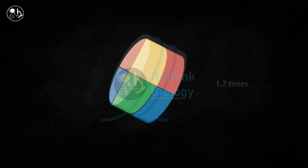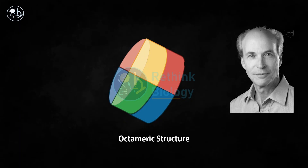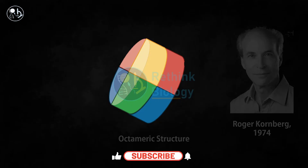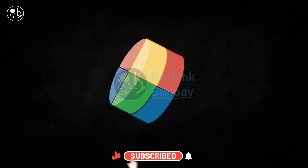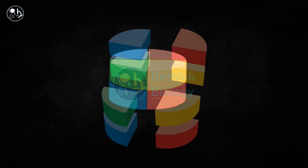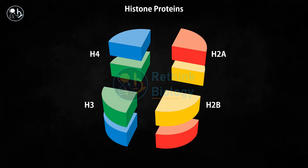The octameric structure of core histones was suggested by Roger Kornberg in 1974. H2A, H2B, H3, and H4 — these are the four types of histone proteins, each of which is present in a pair to form the octameric structure of the histone core.